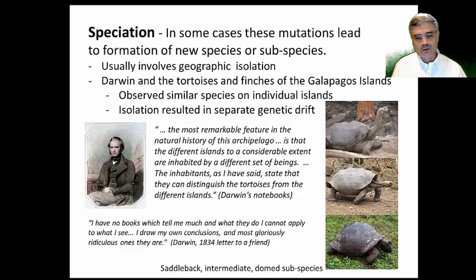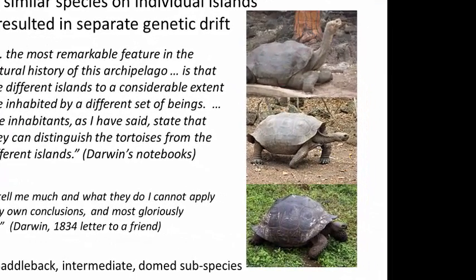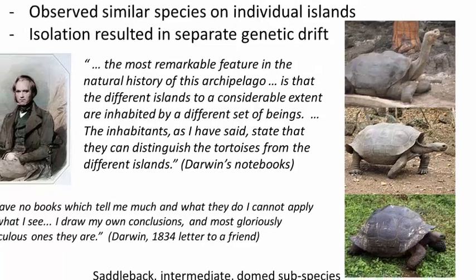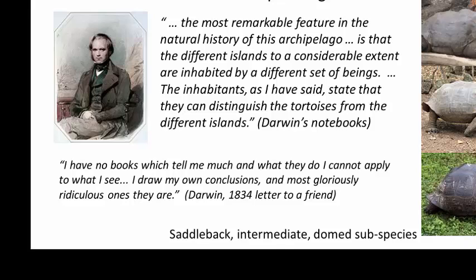Darwin was a young scientist taking a voyage around the world on a boat called the Beagle. They stopped at the Galapagos Islands where he began taking notes on the turtles and finches. He found that the different islands — close to one another — had different turtles: some saddleback, some intermediate, some dome-shaped in terms of their shell. He noted: 'The most remarkable feature in the natural history of this archipelago is that the different islands are inhabited by different sets of beings.' The inhabitants of the islands could distinguish the tortoises from different islands — if there is enough geographic separation, different species can evolve.